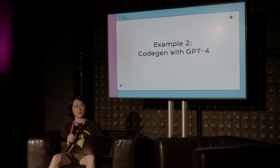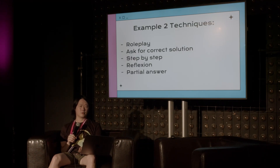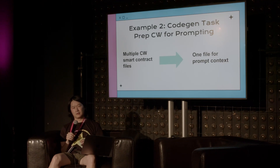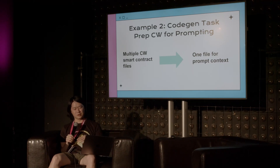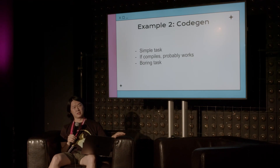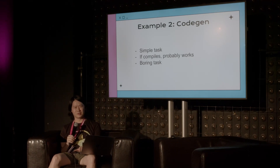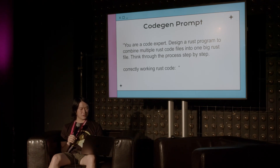The next example is generating Flow code for achievements. The problem was a thousand possible smart contracts split up into multiple files — contract, debug, error, message, query, and so on. I merged them all into one file. I thought it was a good example for GPT because it's a simple task in Rust, so if it compiles it probably works, and it's also a tedious, boring task I didn't want to do myself.